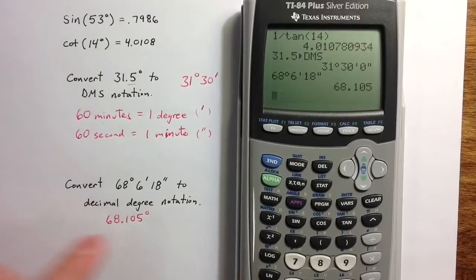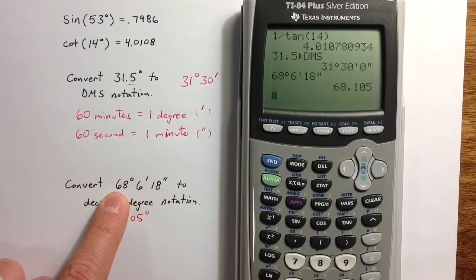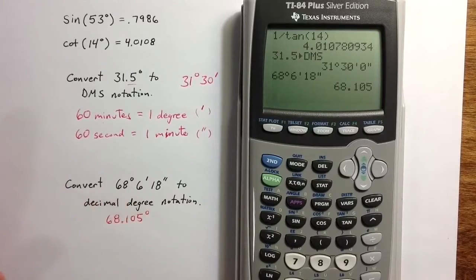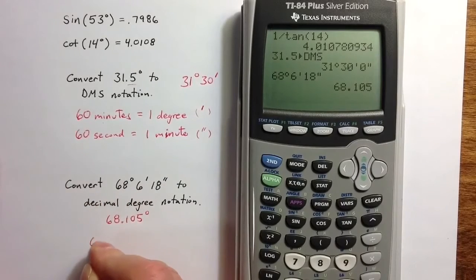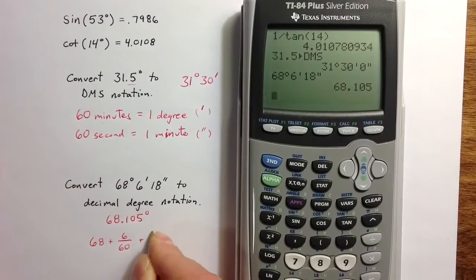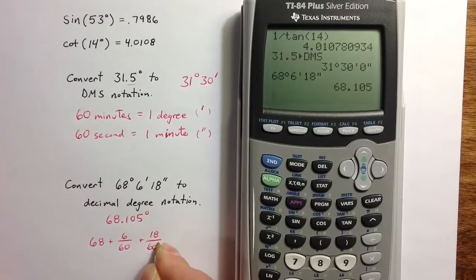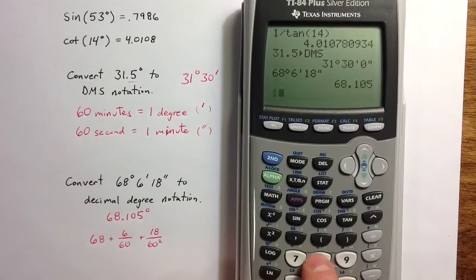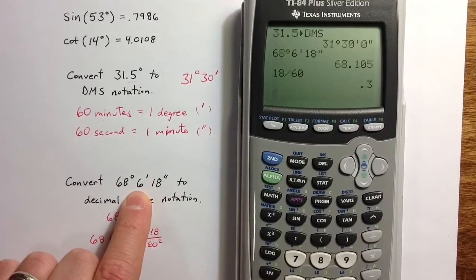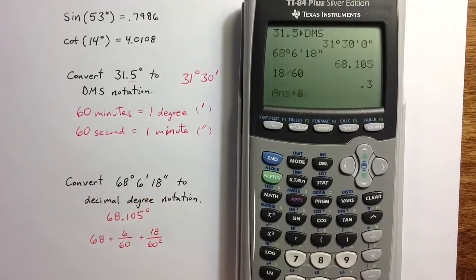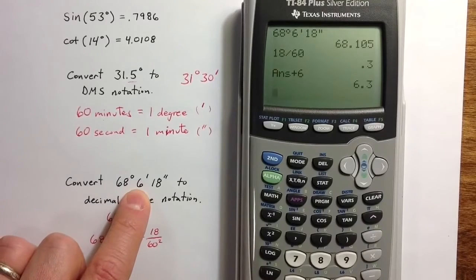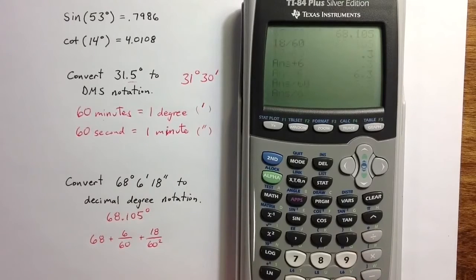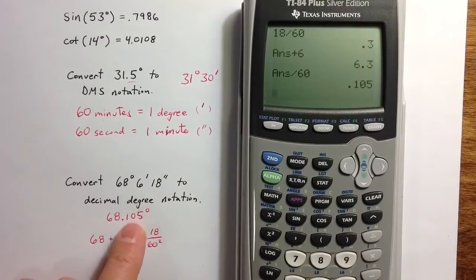We can also directly convert seconds to minutes and minutes to degrees by dividing by 60. Essentially, the value we're looking for is 68 plus 6 divided by 60 plus 18 divided by 60 squared. To do that with the calculator in stages, we can take 18 divided by 60. That turns it into 0.3 minutes. If I add 6, I get the total number of minutes, and then I can divide that by 60 to get the decimal amount of degrees.